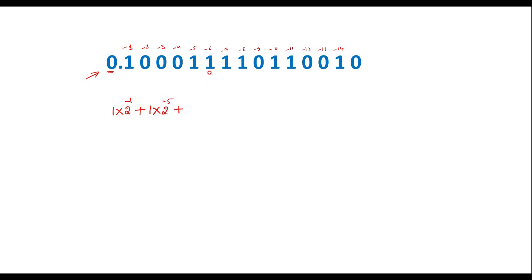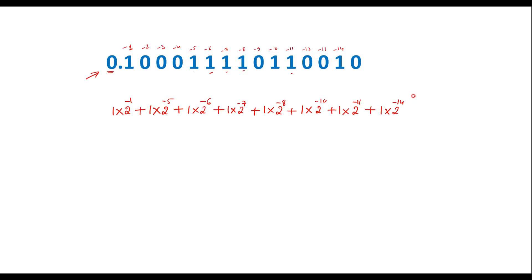Continuing: 1 into 2 power minus 6, plus 1 into 2 power minus 7, plus 1 into 2 power minus 8. Skipping the 0 bit, we have 1 into 2 power minus 10, plus 1 into 2 power minus 11. The 0 bits contribute nothing, and then 1 into 2 power minus 14. Adding all these gives approximately 0.5610, which is the decimal representation of the given Q15 number.